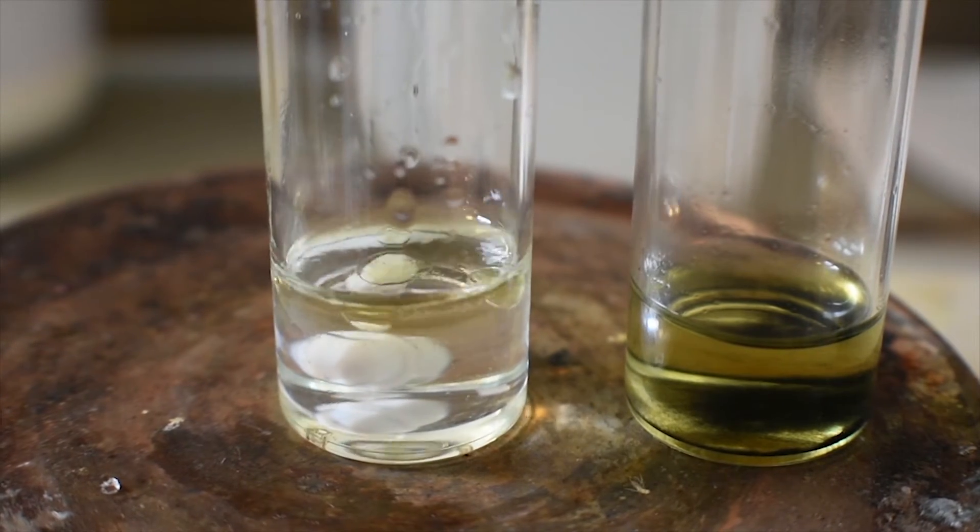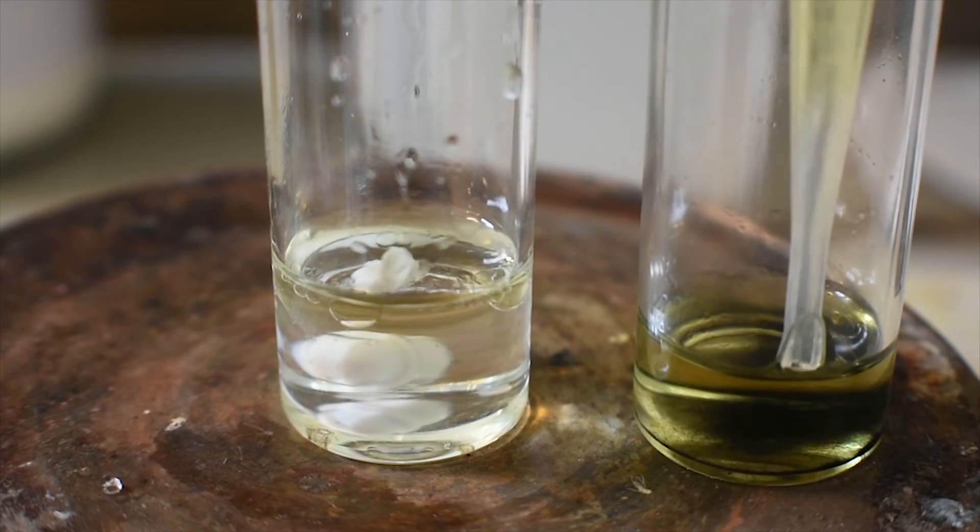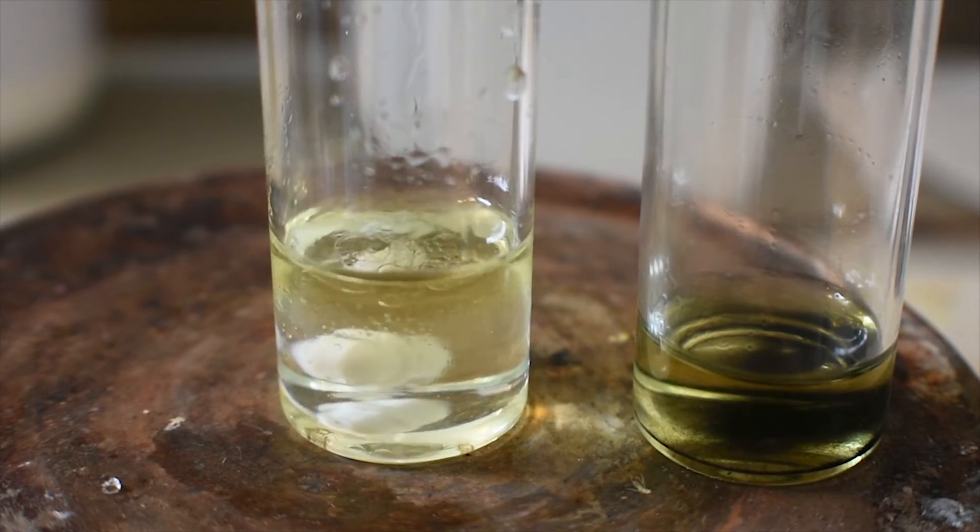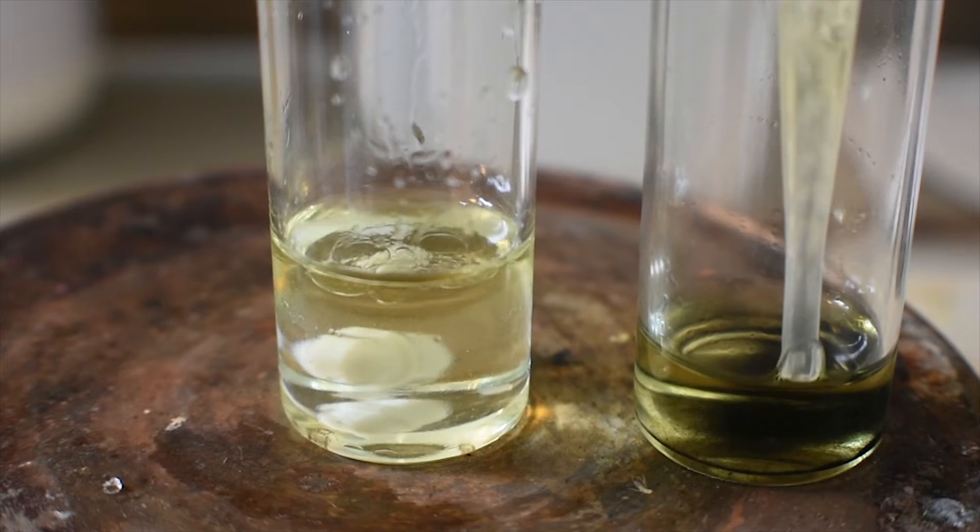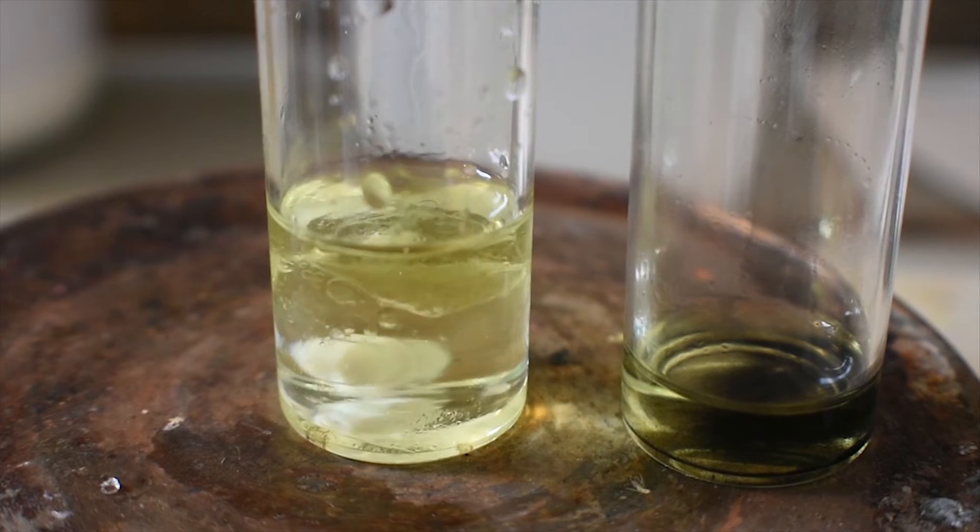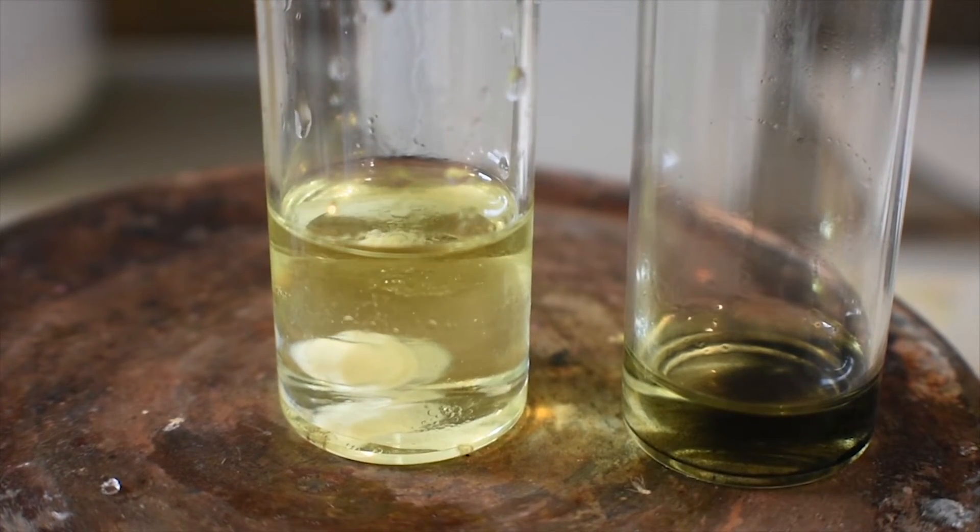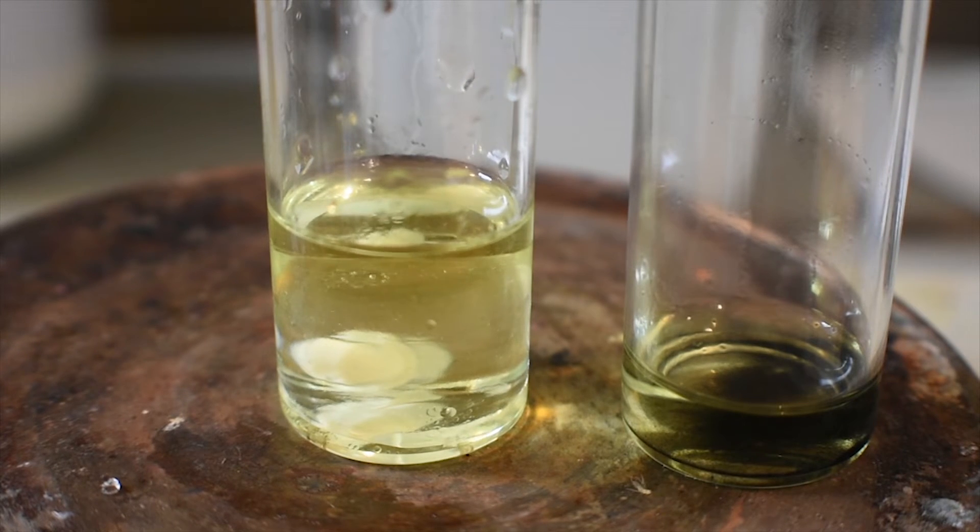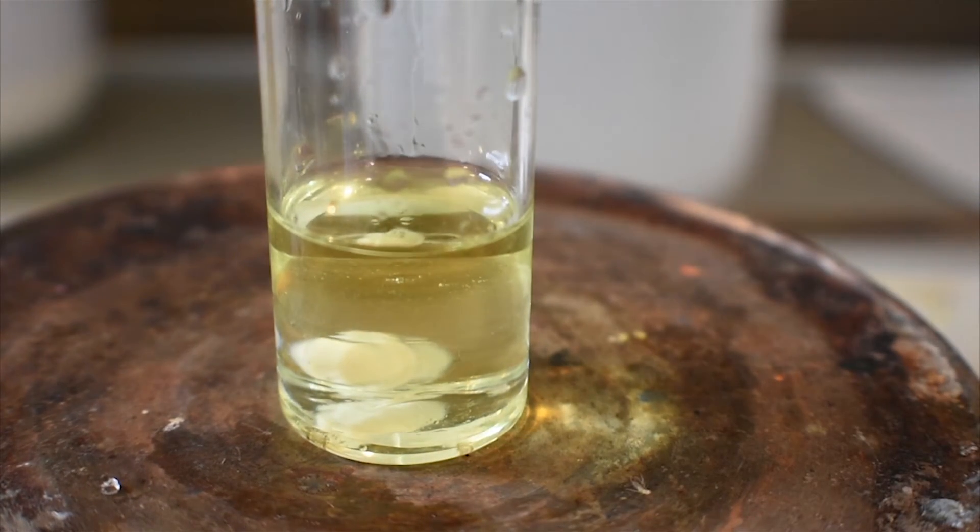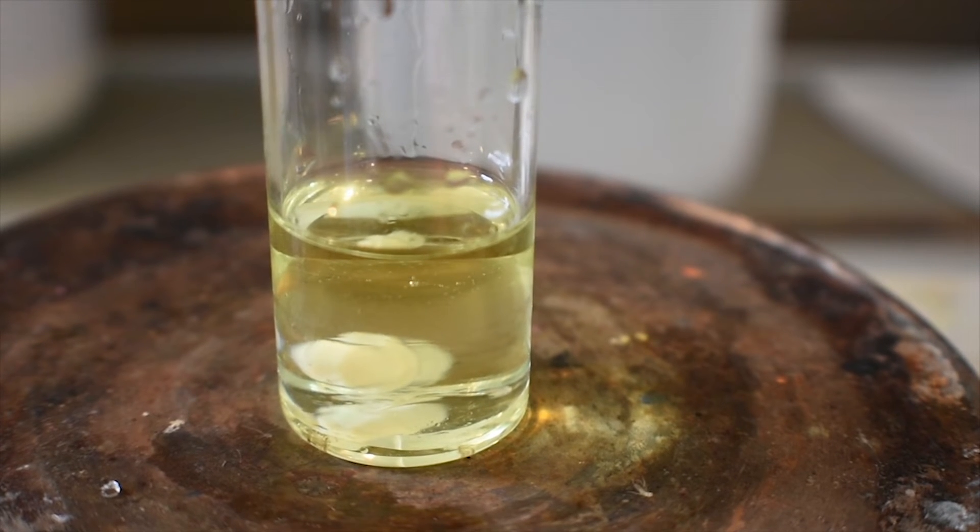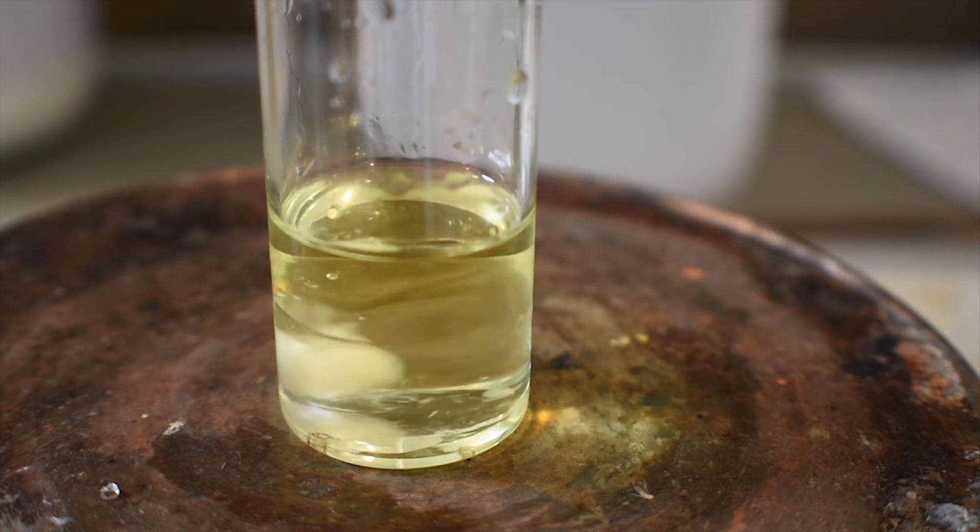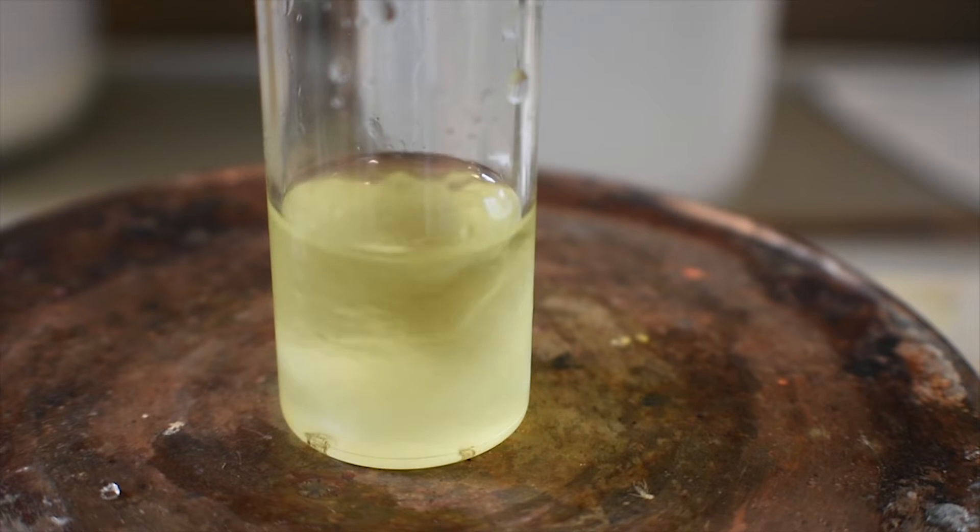Nothing should happen at first. That's because the layers are immiscible and no complexation can really occur unless the two layers are mixed intimately. That's probably about good. What I'm going to do now is stir this to complex the uranium. Stir vigorously, I should add.